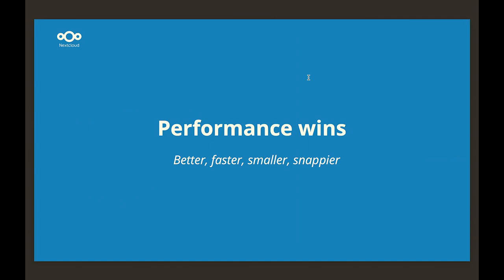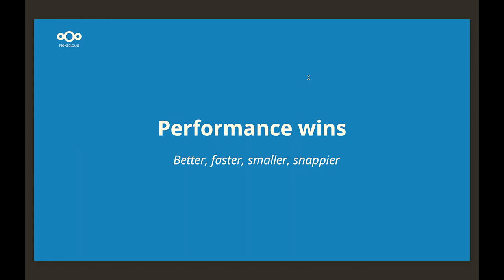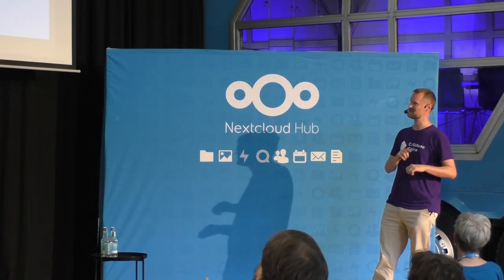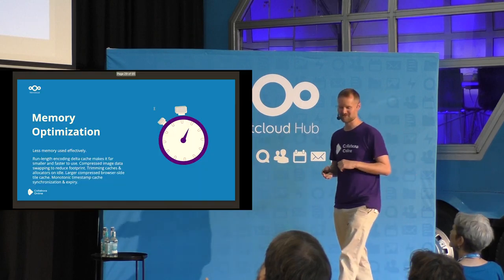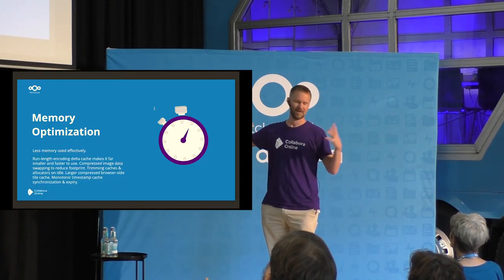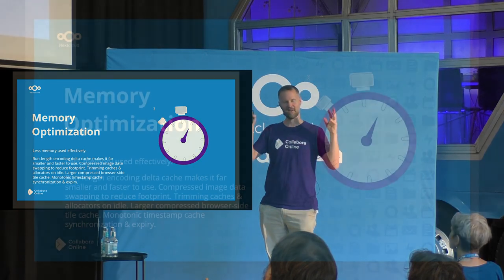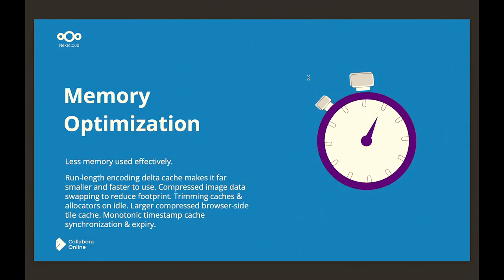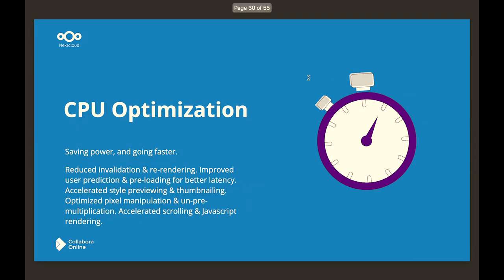One of the things I'm passionate about is making this ever quicker and slicker. We've been working with a small team on using much less memory — you win both performance and memory footprint. By reducing memory use you're better with your cache and more efficient. We've used run-length encoding and various techniques, compressing image caches, swapping compressed images to disk for very large documents, and improving synchronization between client and server.